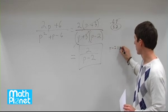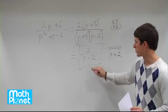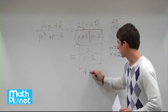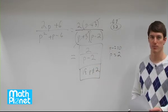When is p minus 2 equal to zero? When p equals 2. So this answer is valid if p does not equal 2. We must include that restriction with our final answer. And that's it.